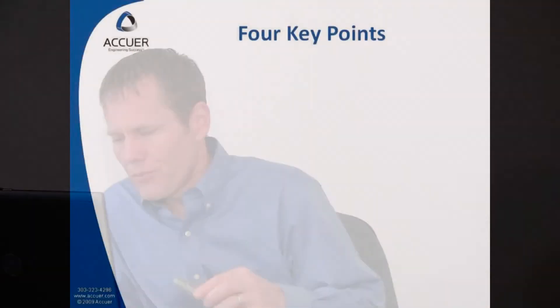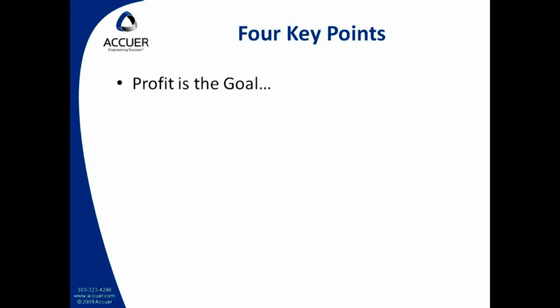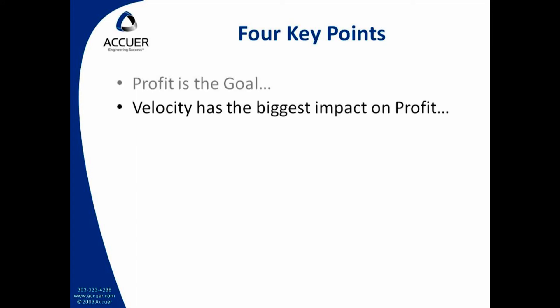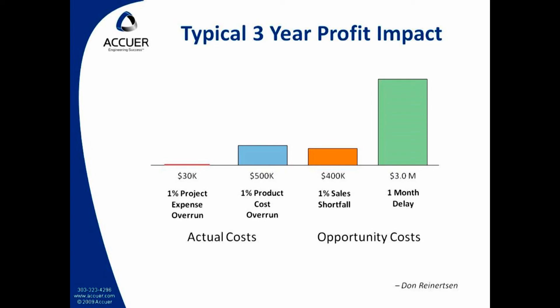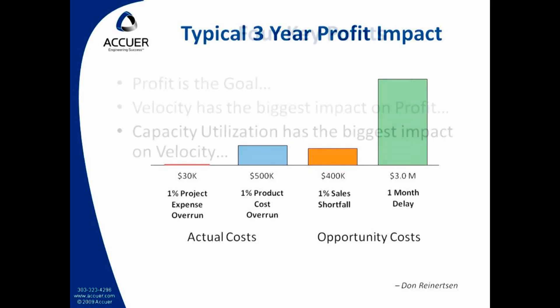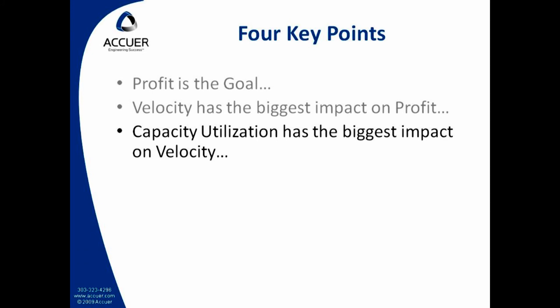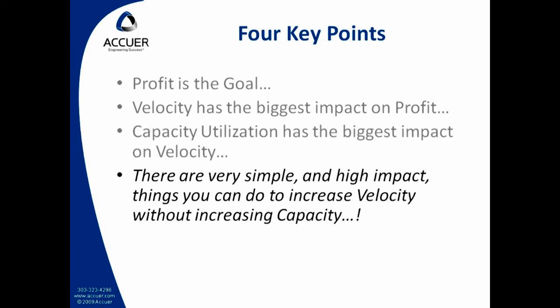So are you getting this? Great. Let me summarize. I hope you now understand these four points. The first one is easy — we want to make a profit. But the biggest opportunity for achieving that happens to be product development velocity, because of the additional market share, sales, and margins that you enjoy while you don't have competition for your new product. I highly suggest you model these four costs for your projects — even companies that think they know their cost of delay are usually underestimating it by a long shot. I showed how capacity utilization has an exponential impact on cycle time, and then gave two examples of how you can decrease cycle time without increasing capacity: managed demand and reduced batch sizes. There are others, but we don't have time for them here.